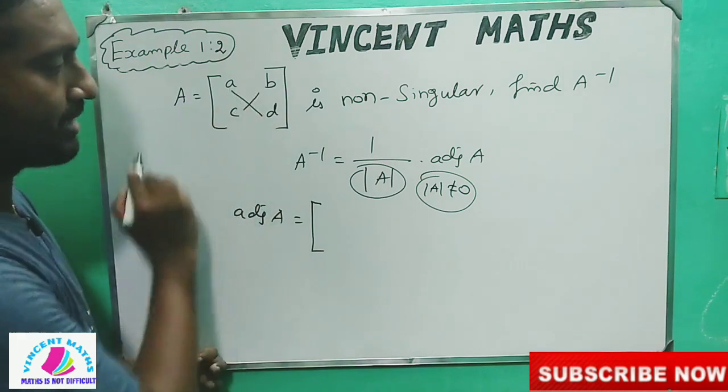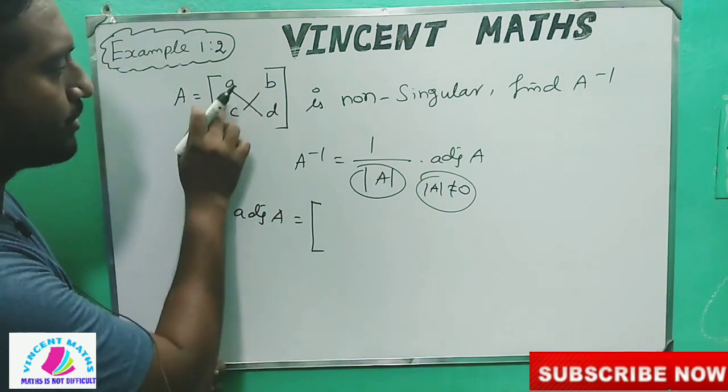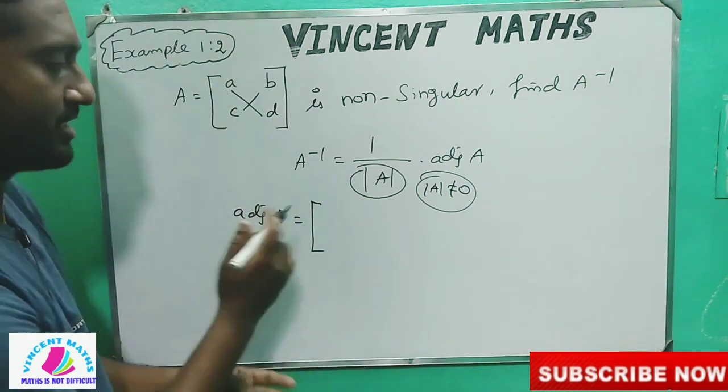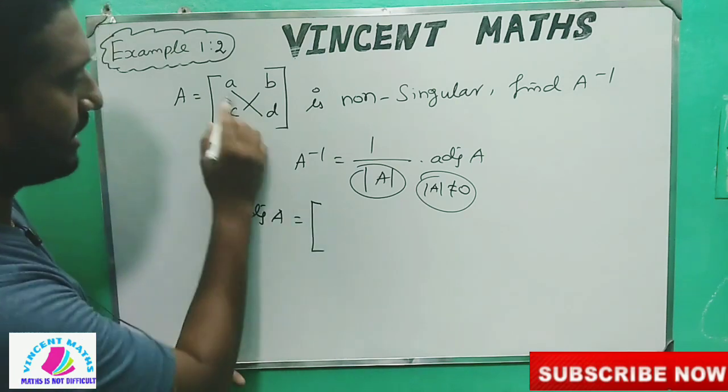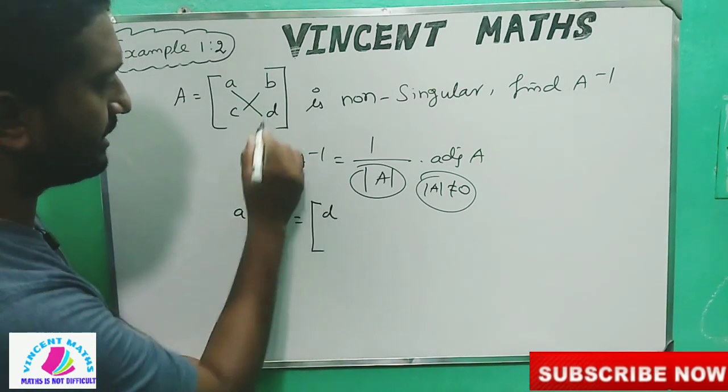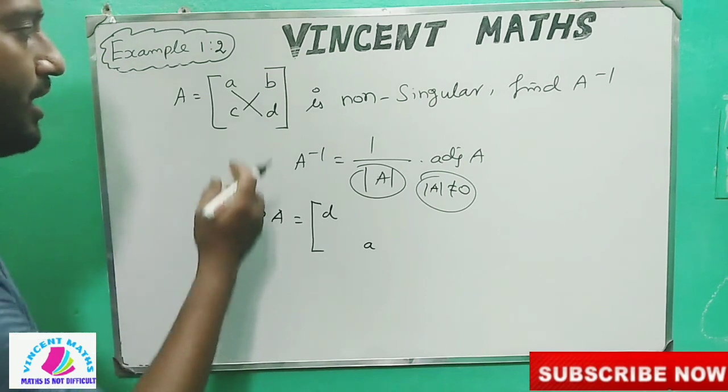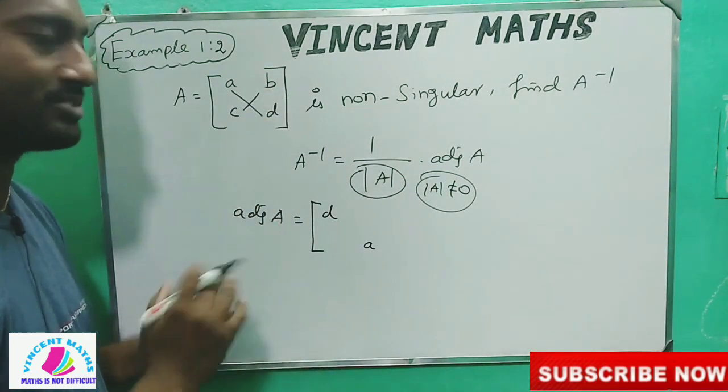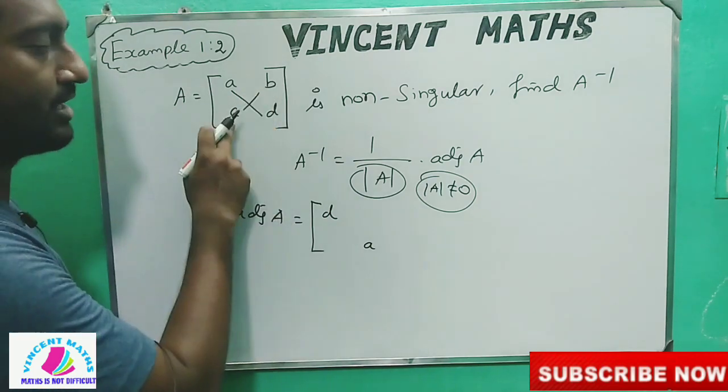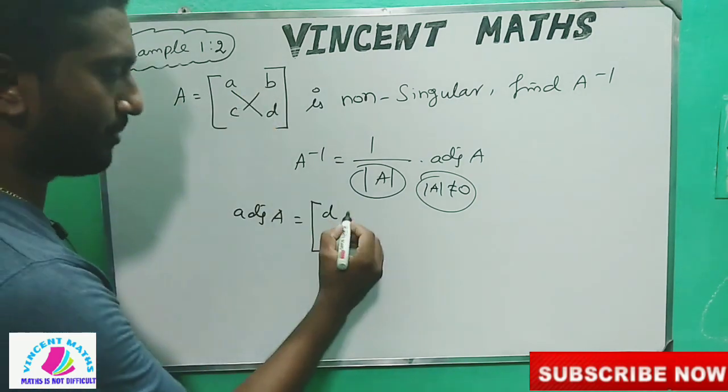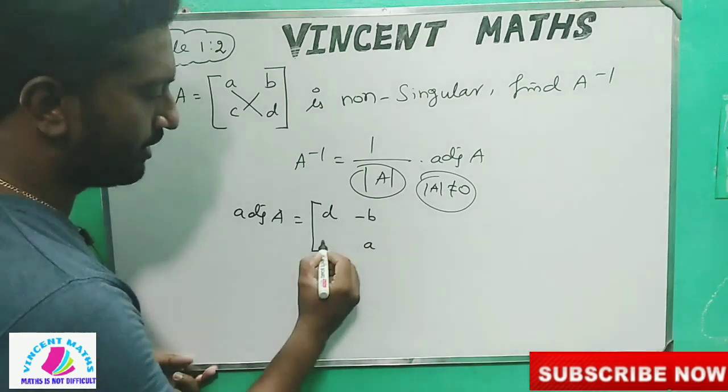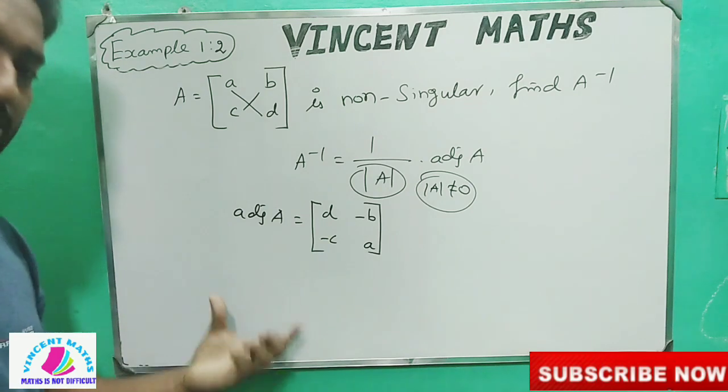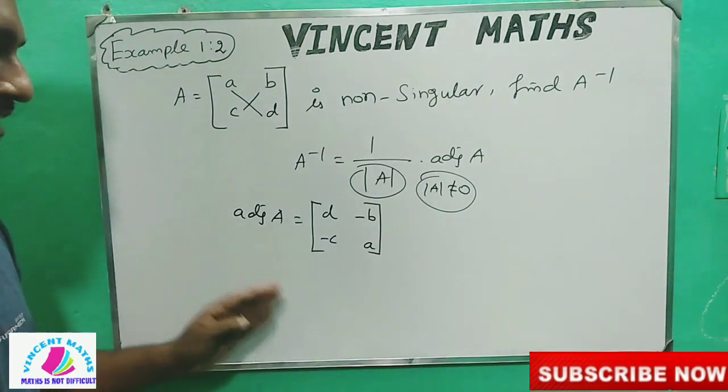That's a and d - that's a change. That's a change in place. A and d change places. What do we do? This symbol or sign - here is plus b, here is minus c. What do we do? Minus b, minus c.